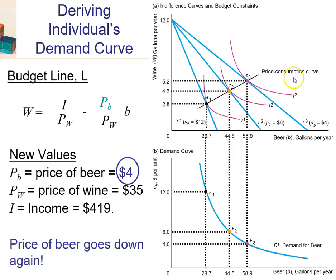All normal goods will have a positive slope price consumption curve. This simply means they obey the law of demand — as you drop the price of them, you want more and more of these goods, hence the positive slope. Below it is a demand curve, which simply plots the different quantities on the horizontal axis with different prices. As you drop the price of beer, this derives a downward sloping demand for beer: lower prices, more consumption of beer.